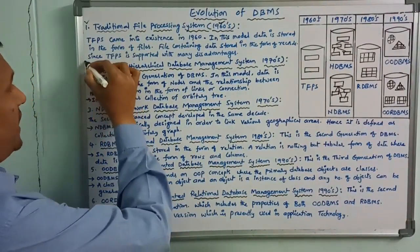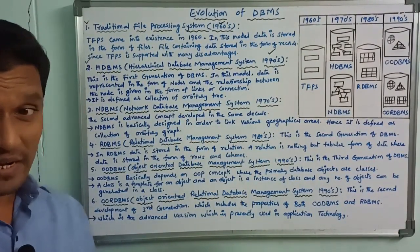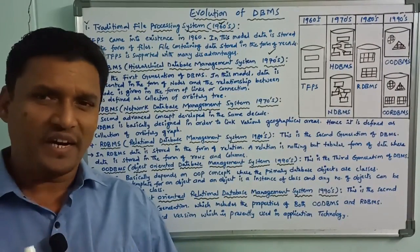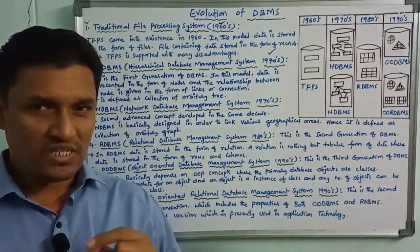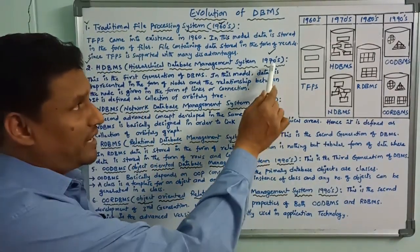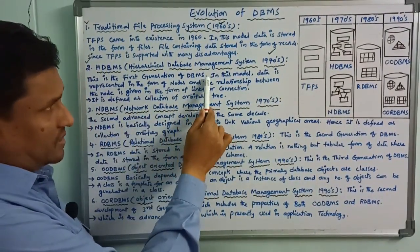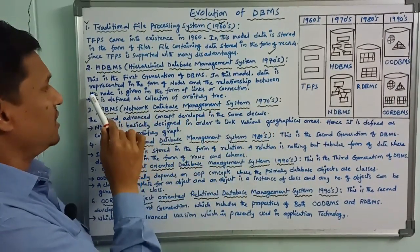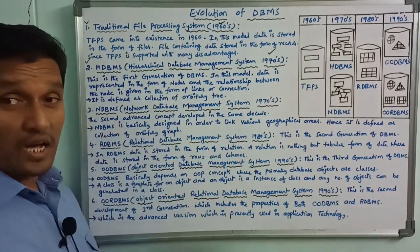Next is the hierarchical database management system. This is the first generation of DBMS. In this model, data is represented in the form of nodes, and the relationship between nodes is given in the form of links or connections. This is represented as a connection of an arbitrary tree.